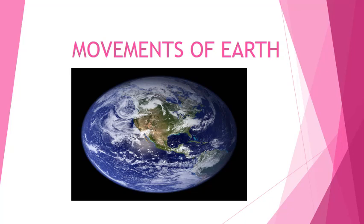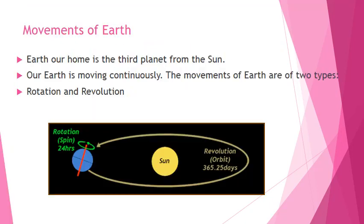Movements of Earth. Earth, our home, is the third planet from the Sun. Our Earth is moving continuously. The movements of Earth are of two types: Rotation and Revolution.